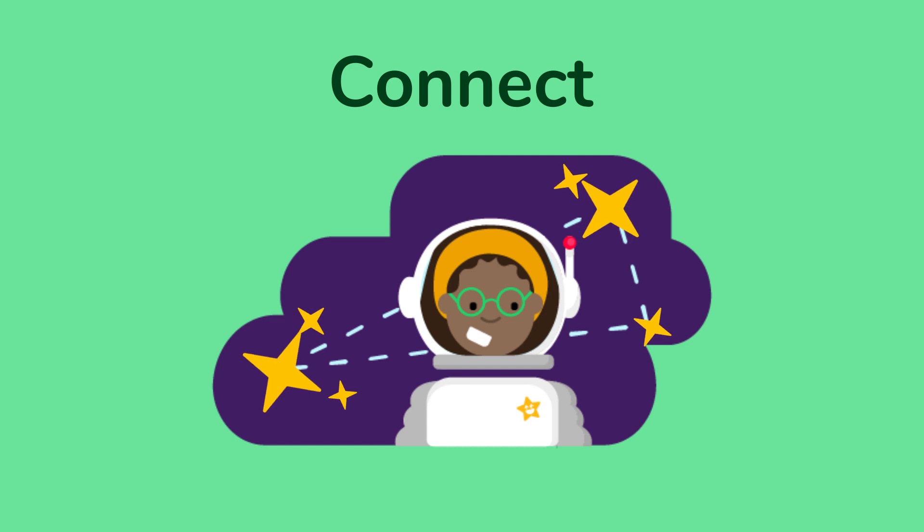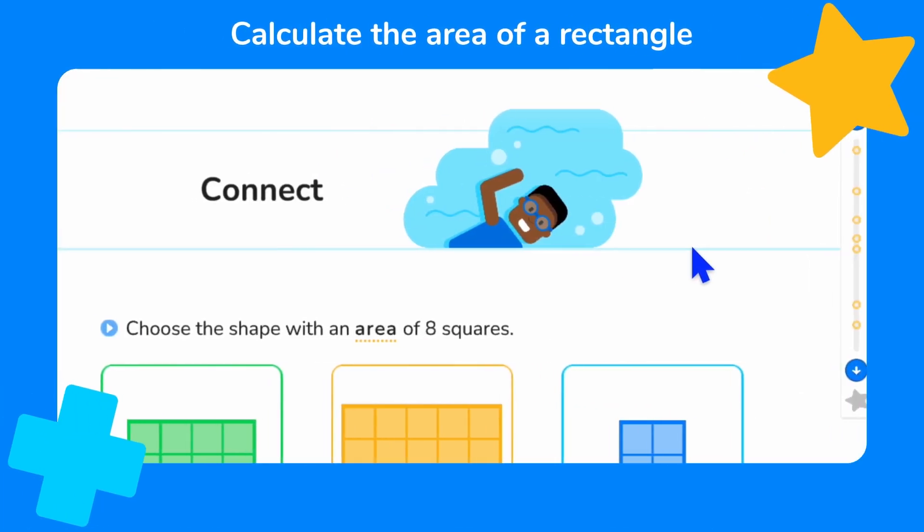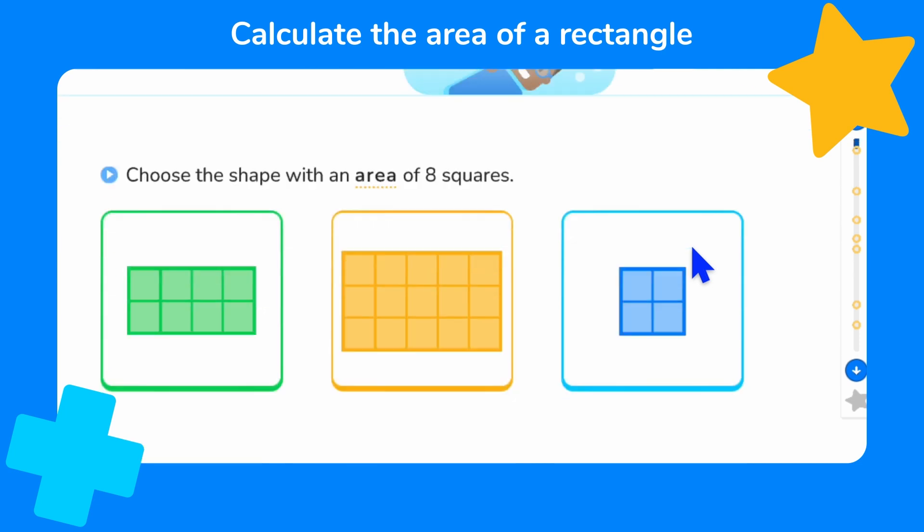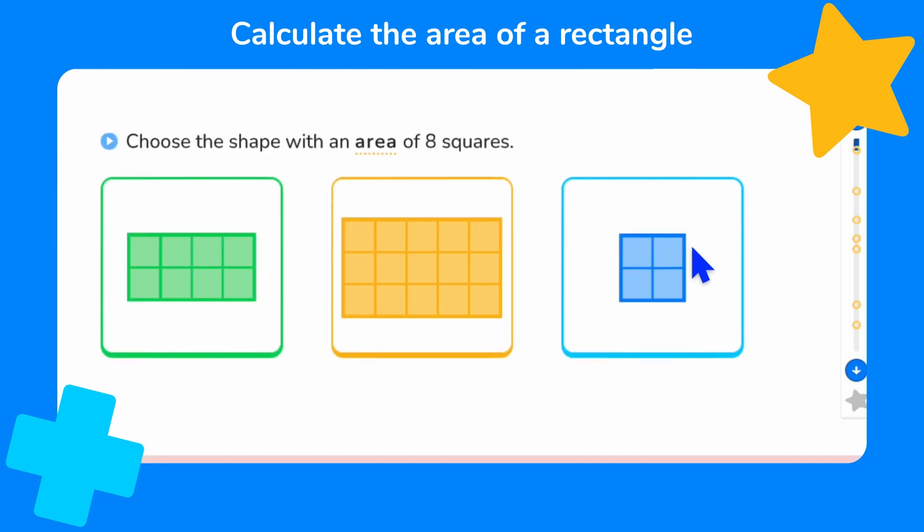First, let's connect what we already know by choosing the shape with an area of eight squares, which will help us with the rest of the lesson. Here we have three shapes, two rectangles and one square. We can work out the area of each shape by counting the squares inside. We need to choose the shape with an area of eight squares.